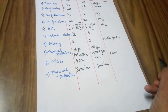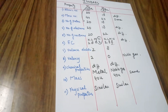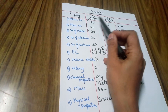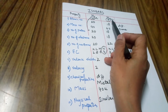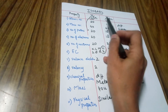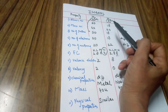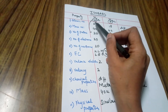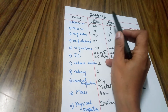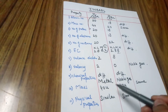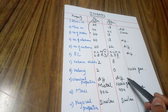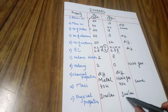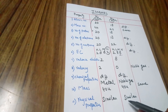Now, on the basis of the data that we have just covered, let's define isobars. Isobars are atoms of different elements having different atomic numbers but the same mass number. Since the atomic numbers are different, the chemical properties would be different. But since their mass number remains the same, the physical properties are similar.